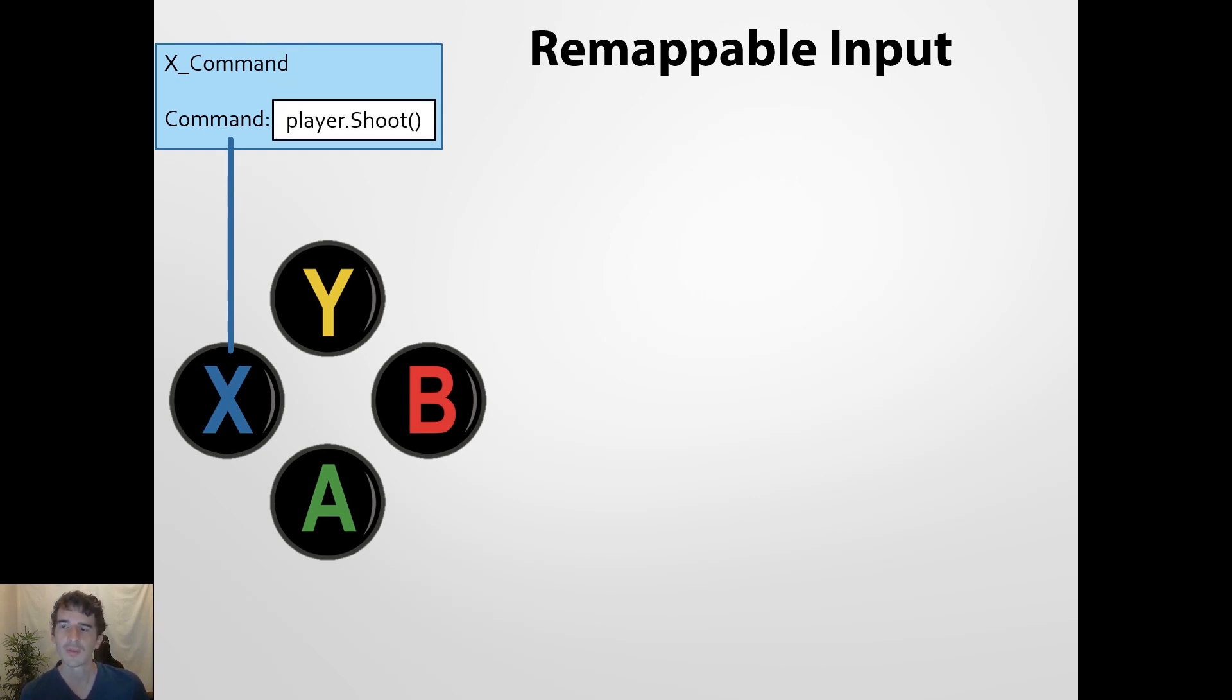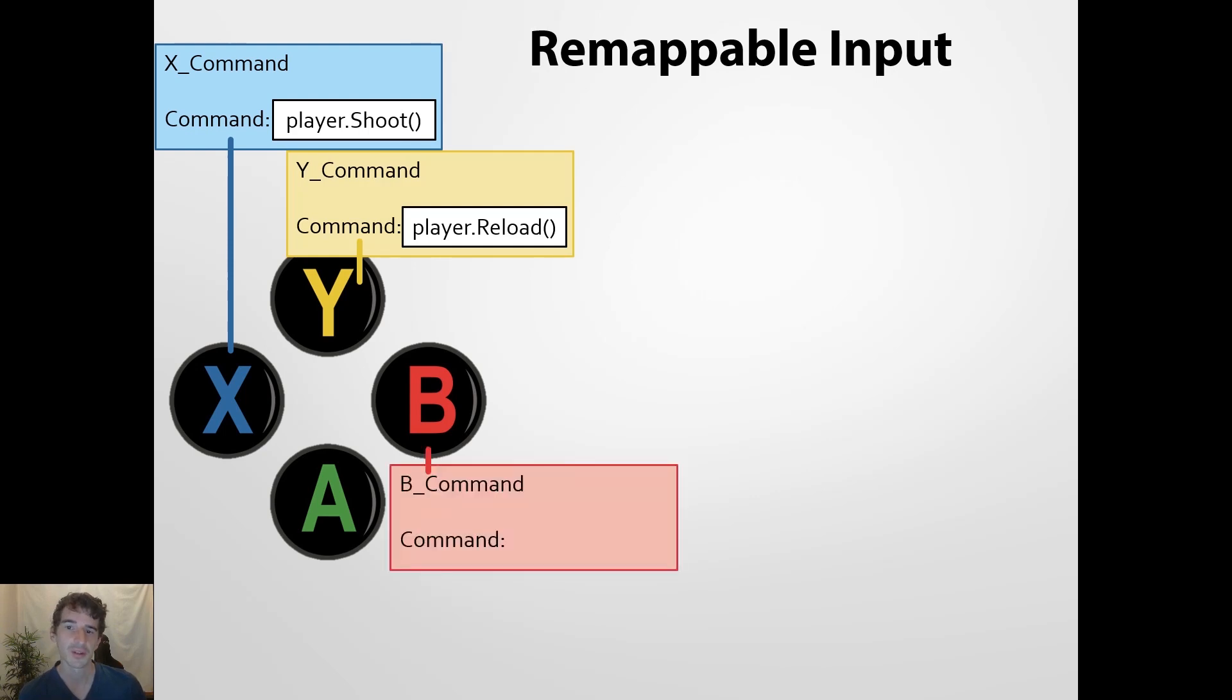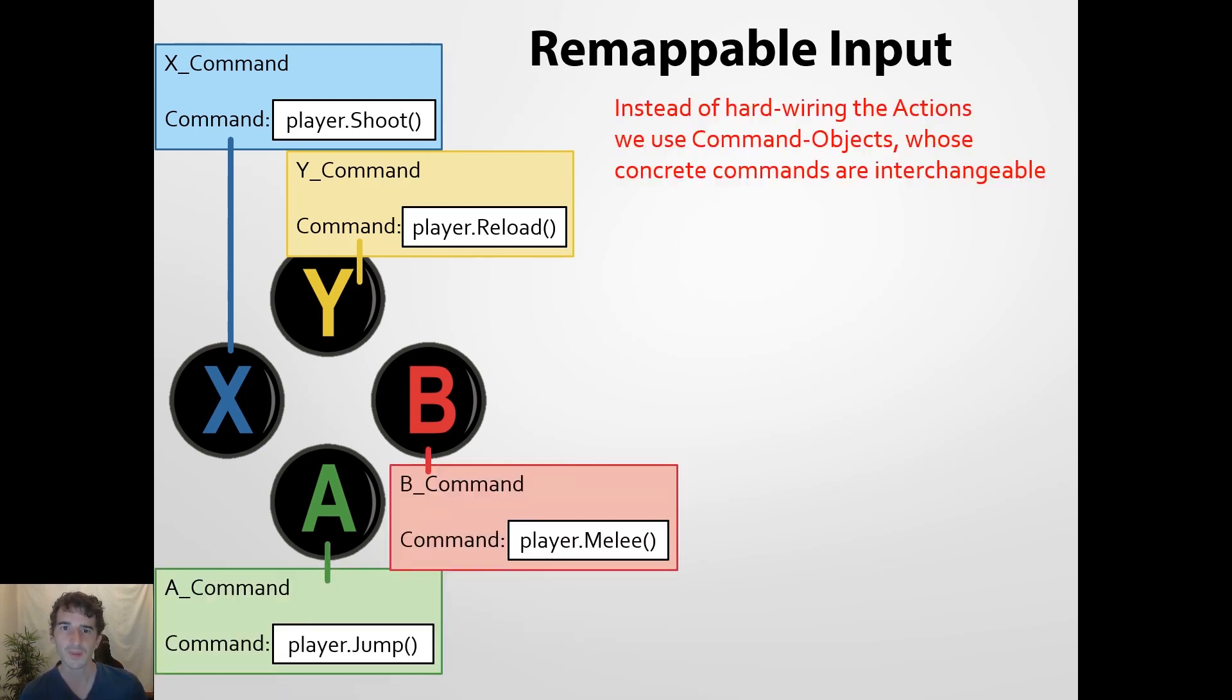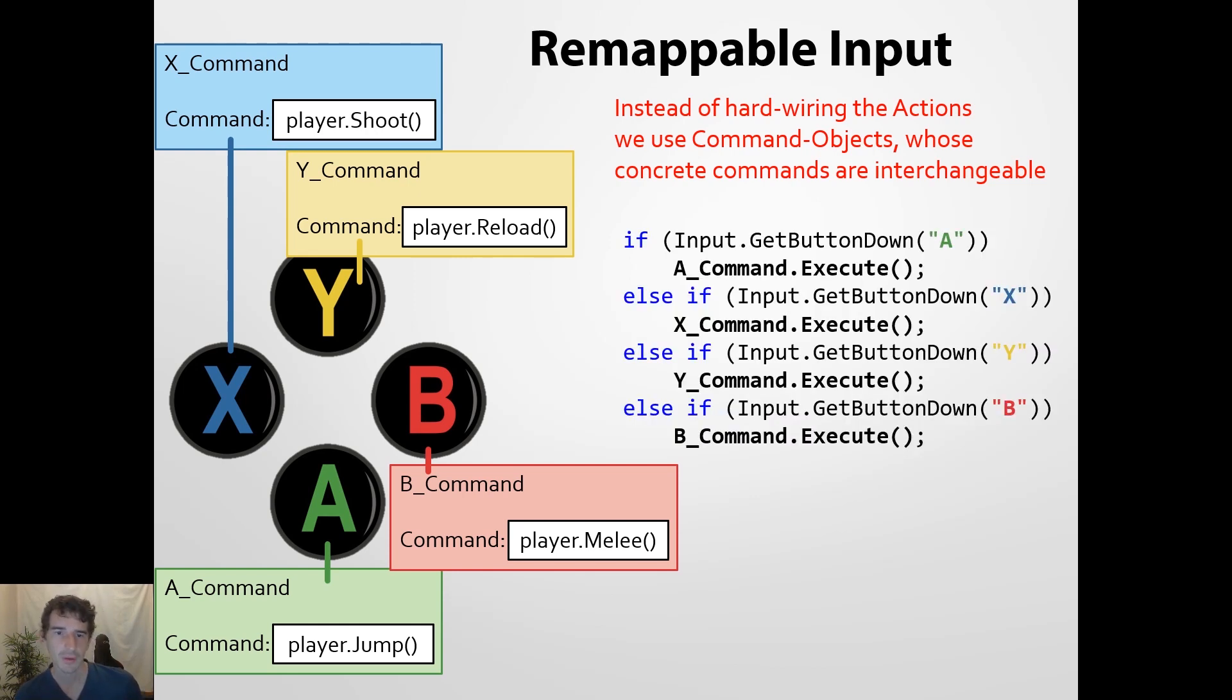we use a command object. And this command object calls then the method we want to use. In this example, we have the X command object and it calls the method shoot. And if we have the Y command, we call the command player.reload. And the same goes for melee and jumping. Now, by doing so, we cut the hardwiring out and we make those commands interchangeable.